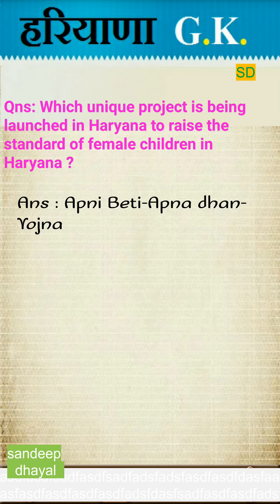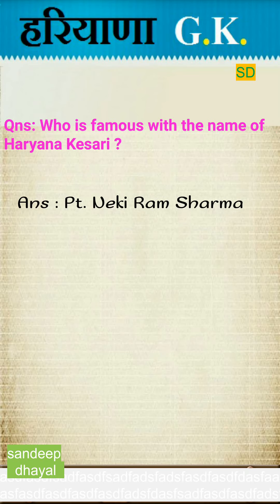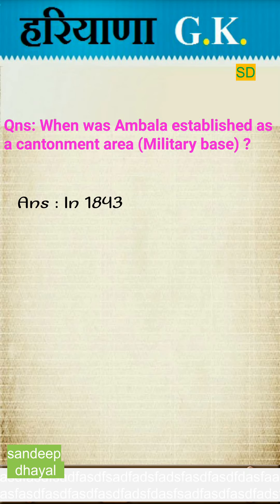Which unique project is being launched in Haryana to raise the standard of female children? The first time President's Rule was imposed in Haryana was on 21st November 1967. Who is famous with the name of 'Haryana Kishani'? Answer: Pandit Nikiram Sharma. When was Ambala established as a cantonment area? Answer: Military base in 1843.